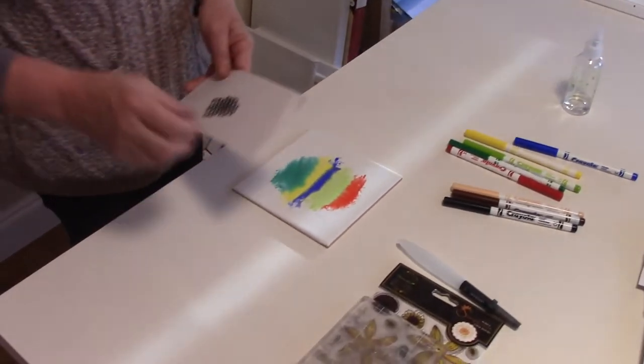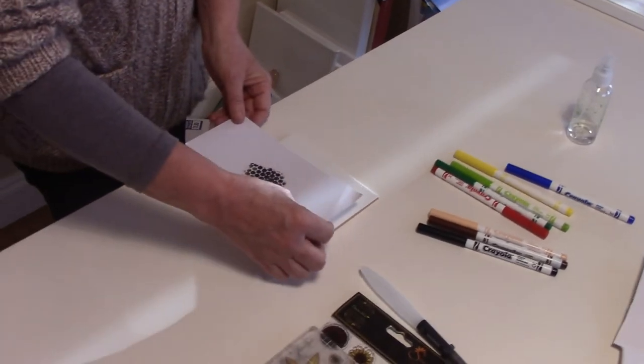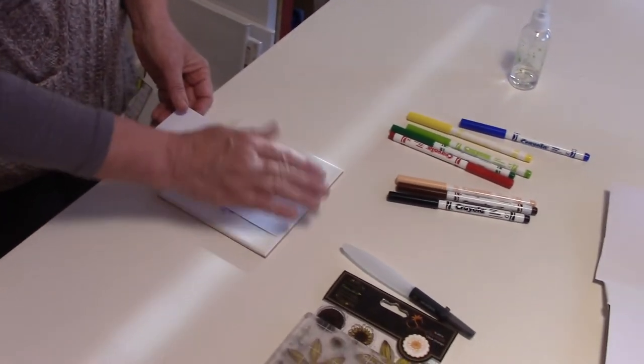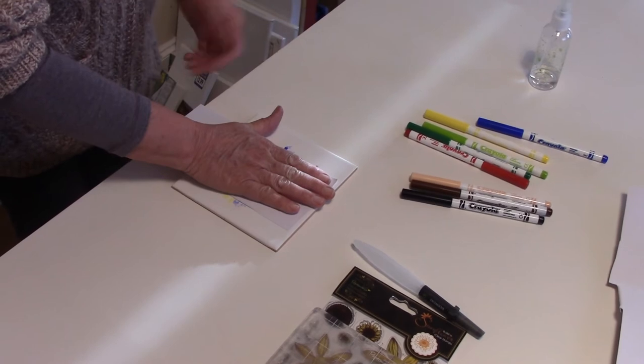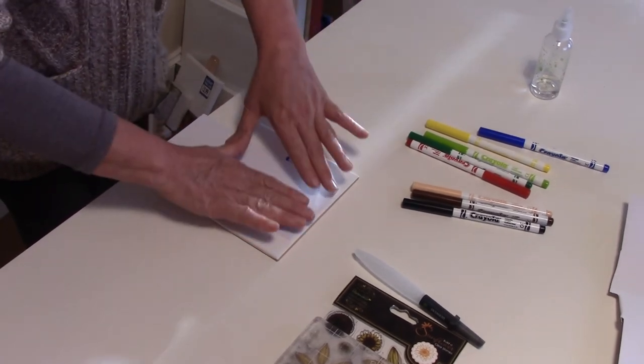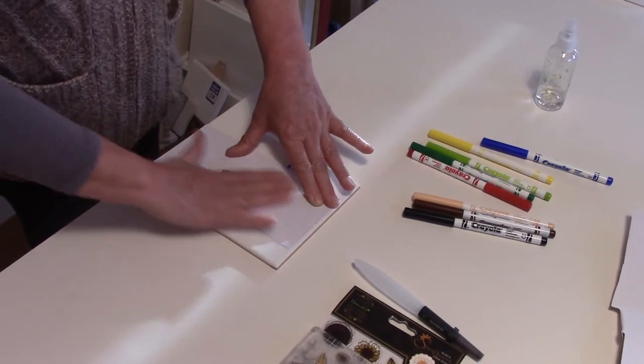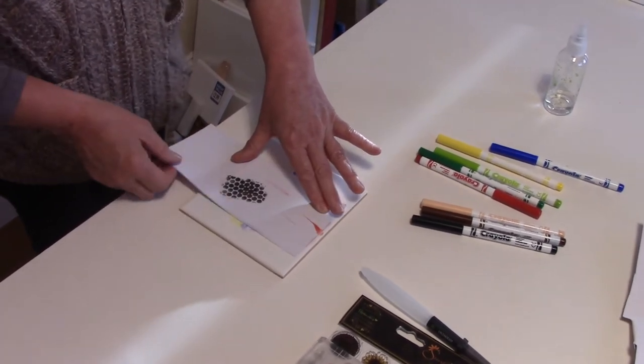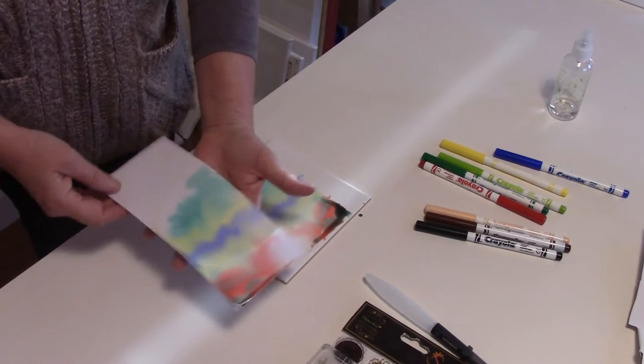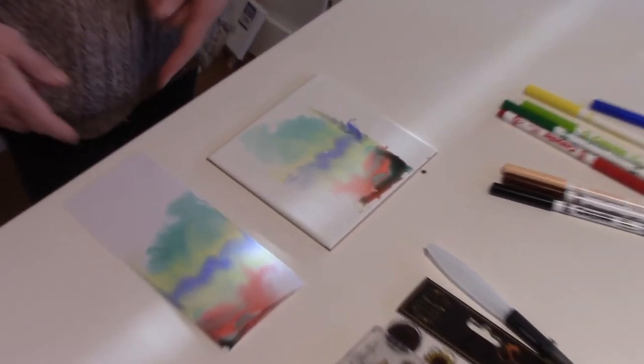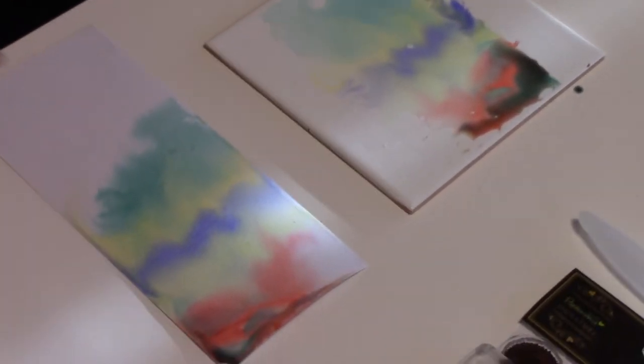Now I'm just using some scrap card for demonstration purposes, so you simply put your scrap card or your piece of card that you want for your background down onto your sprayed marker. And when you lift it up, you have the most beautiful background image. You can go back in again and pick up some more of the color.